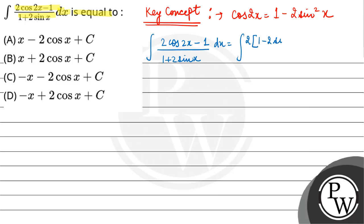2[1 - 2sin²x] - 1 upon 1 + 2sinx dx, which comes out to be (2 - 4sin²x - 1)/(1 + 2sinx) dx.